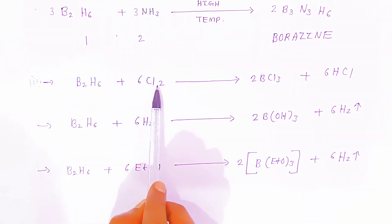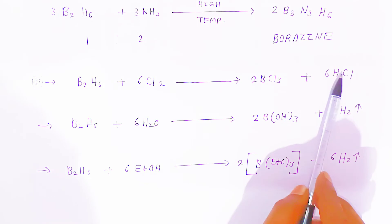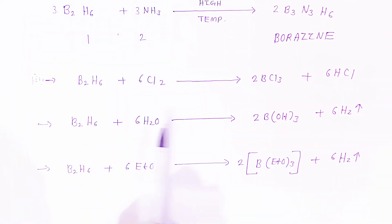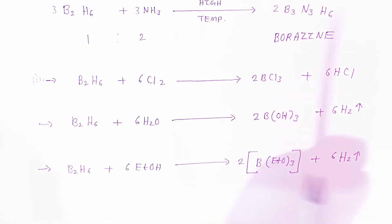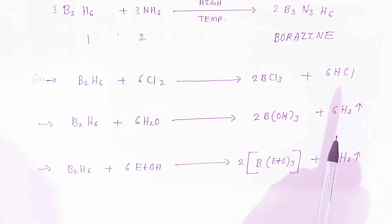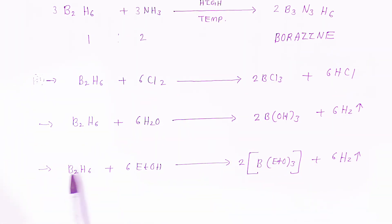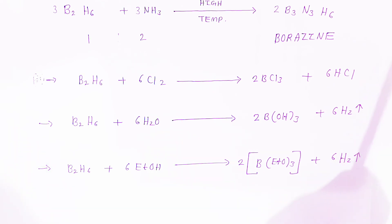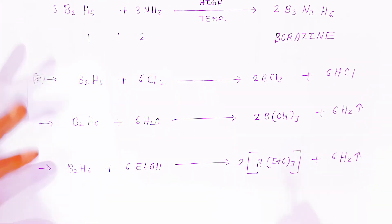Diborane reacts with chlorine gas to form boron trichloride and HCl molecules. Diborane also reacts with water molecules to form boric acid and hydrogen gas is eliminated. Diborane also reacts with ethyl alcohol; adding borane to ethyl alcohol forms boron ethoxide with elimination of hydrogen gas. These reactions are very important from an examination point of view.